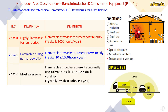IEC hazardous area classification: Zone 0 is a highly flammable zone where a flammable atmosphere is present continuously, typically 1000 hours per year. Zone 1 is flammable during normal operation with the atmosphere present intermittently, typically in the range of 10 to 1000 hours per year. Zone 2 is the most safe zone where a flammable atmosphere is present abnormally, typically as a result of a process fault, typically less than 10 hours per year.